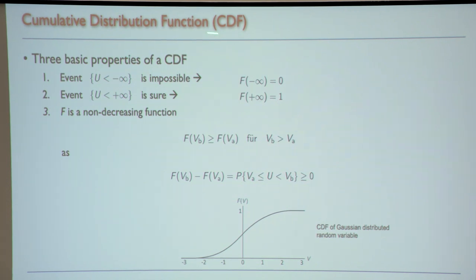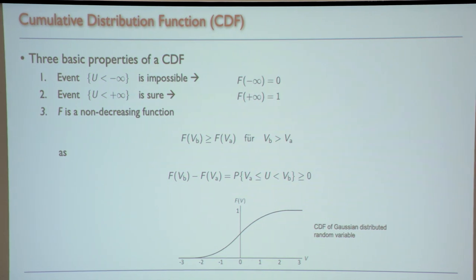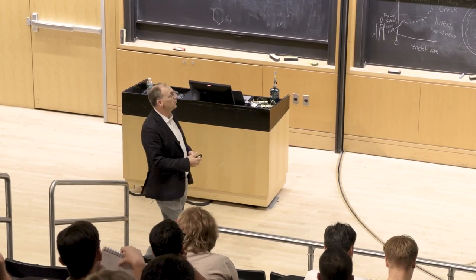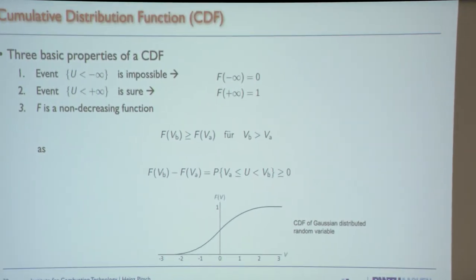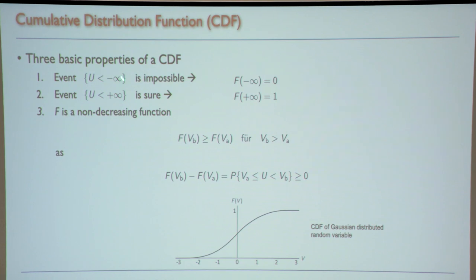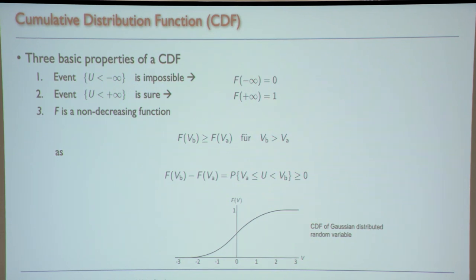I can define the cumulative distribution function (CDF) by asking, for all possible given velocities V, what is the probability that the measured velocity is less than V? The CDF gives the probability that the velocity is less than V, where V is a variable ranging over all possible values.